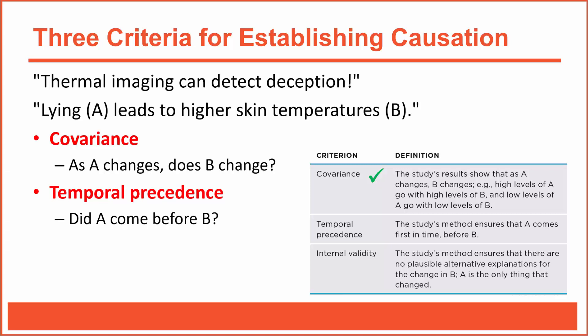Temporal precedence refers to the importance of timing. If the researchers want to claim that lying leads to higher skin temperatures, then the lying manipulation must come before temperature readings are measured. So, we can ask ourselves: were thieves instructed to lie and innocent suspects instructed to tell the truth before skin temperature readings were measured? Yes — clearly the answer is yes. That's exactly how the study was designed to be carried out. That means this study meets the requirement for temporal precedence.